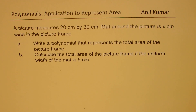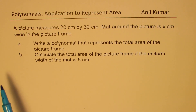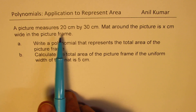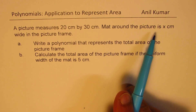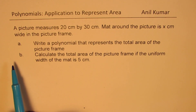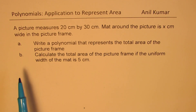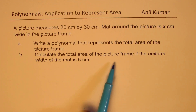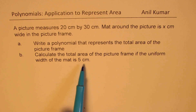I'm Adil Kumar. Welcome to my series on Polynomials, Application to Represent Area. The question here is: a picture measures 20 centimeters by 30 centimeters. The mat around the picture is x centimeters wide in the picture frame. Write a polynomial that represents the total area of the picture frame, and part B is to calculate the total area of the picture frame if the uniform width of the mat is 5 centimeters.